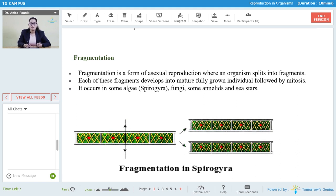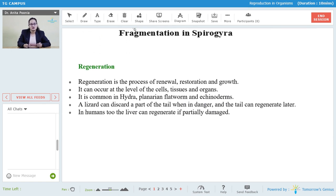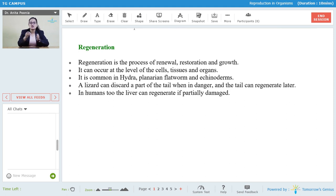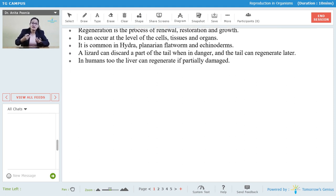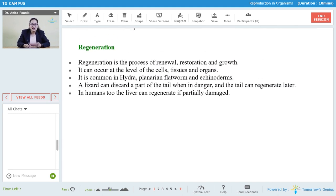Let us move on to the next type of asexual reproduction, that is regeneration. Now regeneration as the name suggests, generating something or regenerating something. In this process renewal, restoration and growth takes place. It occurs at the level of cell, tissue or organ. It's common in hydra, planaria, flatworms and echinoderms.